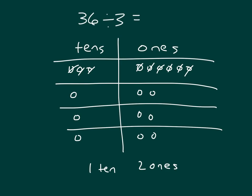One ten and two ones, which also equals twelve. So thirty-six divided by three equals twelve. We started with three tens — when we divided three tens by three, we got one ten. When we divided six ones by three, we got two ones. Putting that together, one ten and two ones equals twelve.